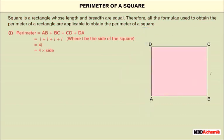Perimeter is equal to AB plus BC plus CD plus DA equals to L plus L plus L plus L equals to 4L equal to 4 into side. One side of a square is equal to 1 fourth of perimeter.